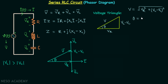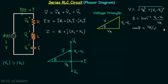The power factor angle θ equals tan inverse of (VL minus VC) divided by VR, and the power factor cos θ equals VR divided by V. Whether the power factor will be leading or lagging depends on the values of inductance and capacitance.